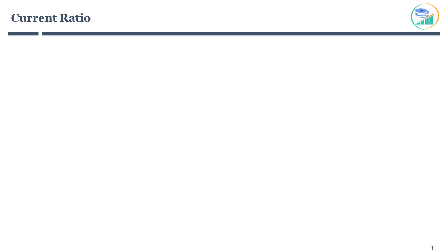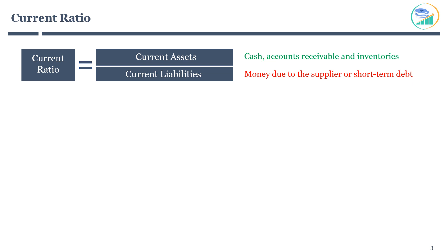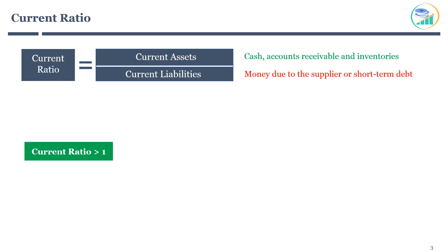Let's understand the current ratio now. It is calculated as current assets divided by current liabilities. Remember from the balance sheet session, current assets include assets that can be converted to cash within a year, such as cash, accounts receivable, and inventories. On the other side, current liabilities refer to liabilities payable within one year, like money due to the supplier or short-term debt obligations. When current ratio is greater than 1, this means the company's current assets exceed current liabilities — generally a good sign, since the company can pay off its current liabilities with its total current assets if it chooses to.